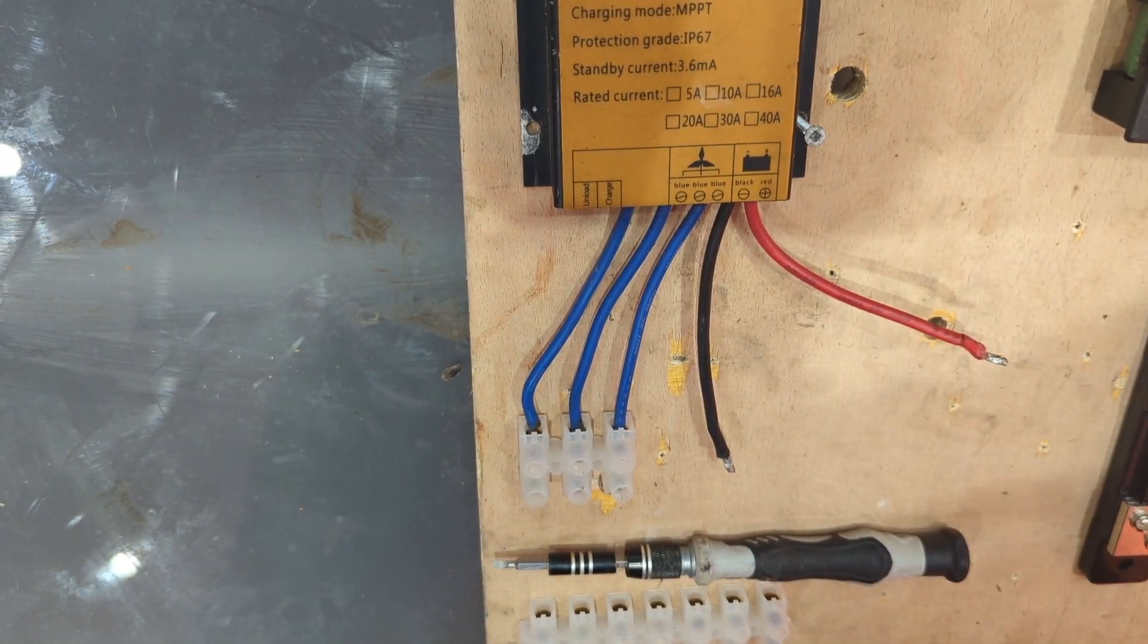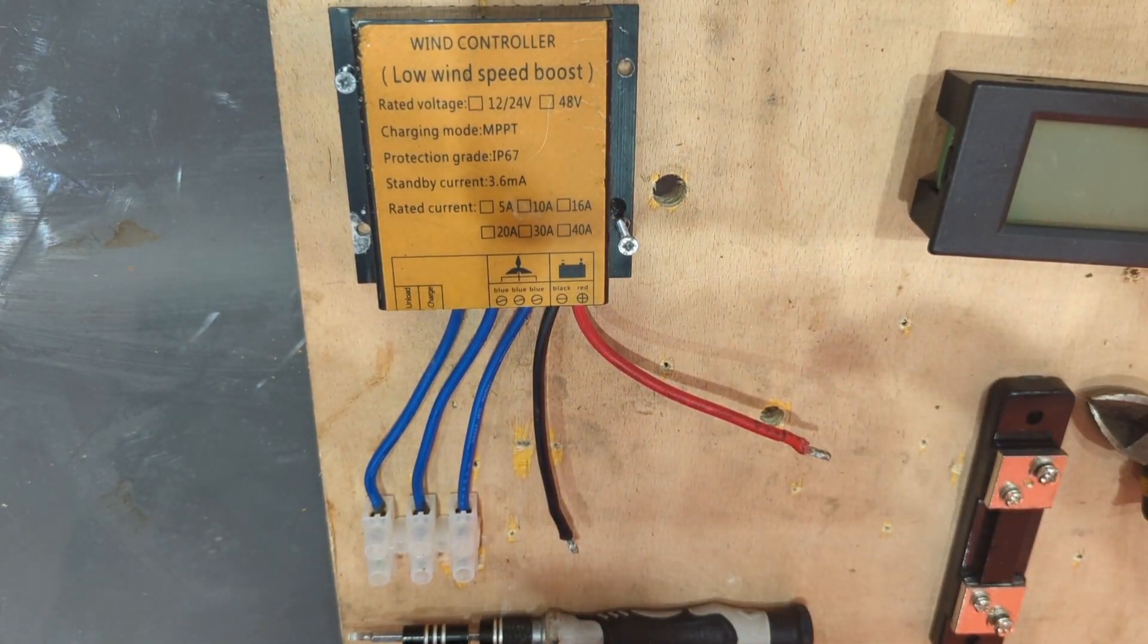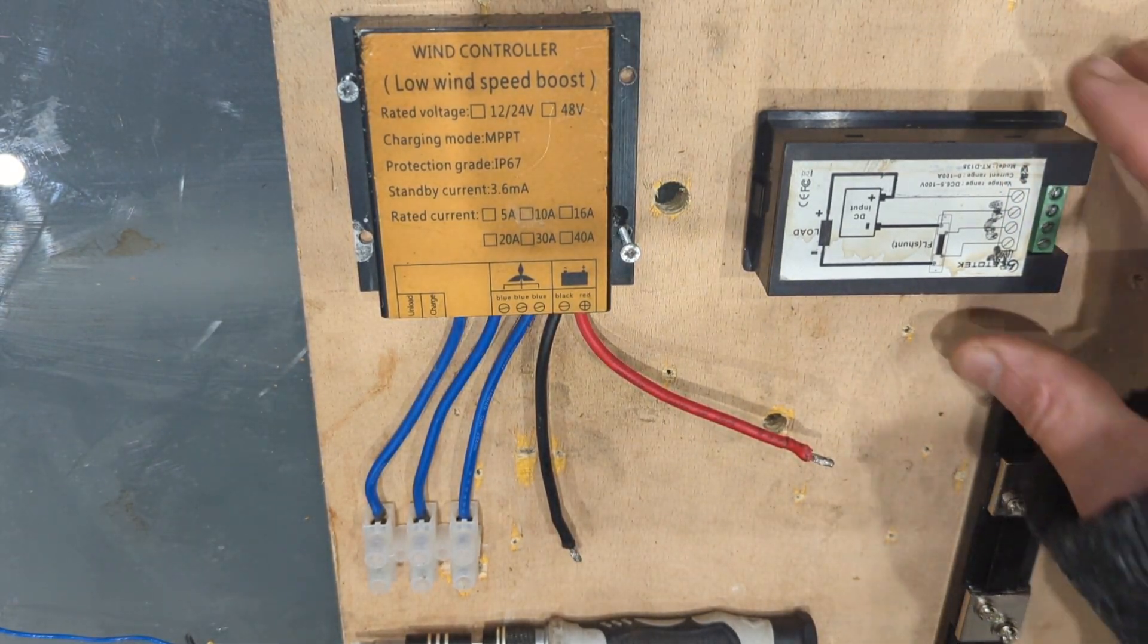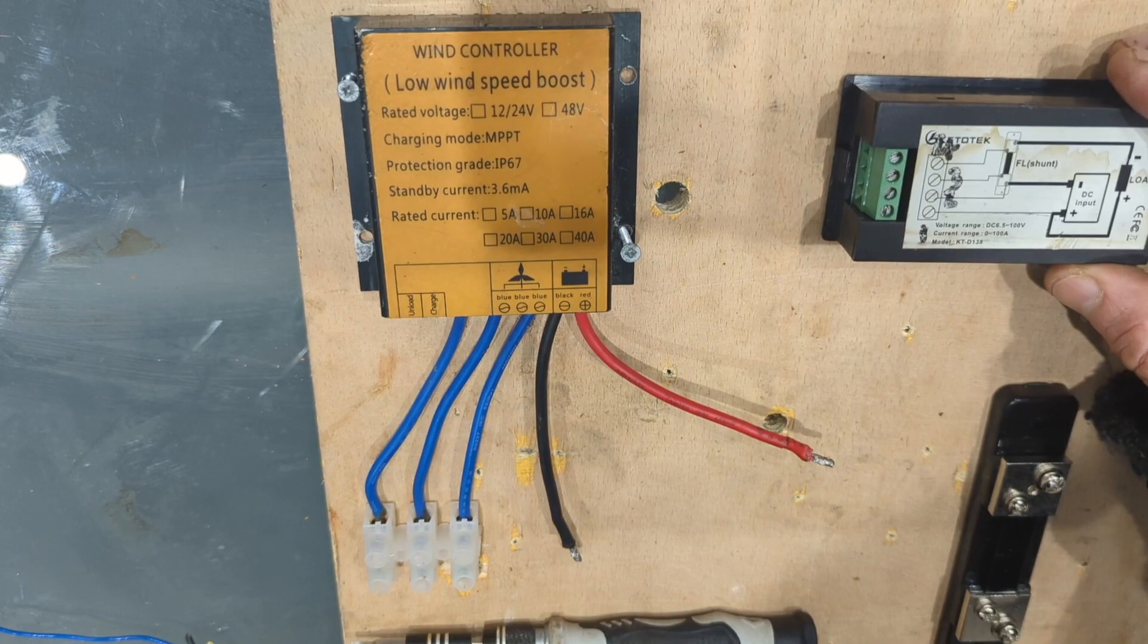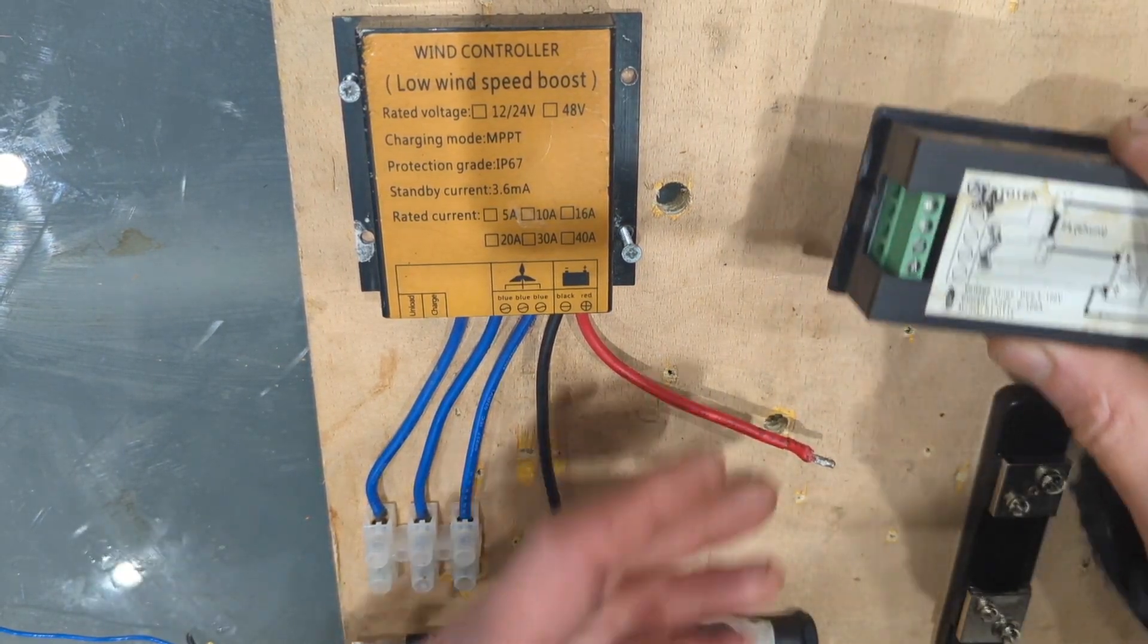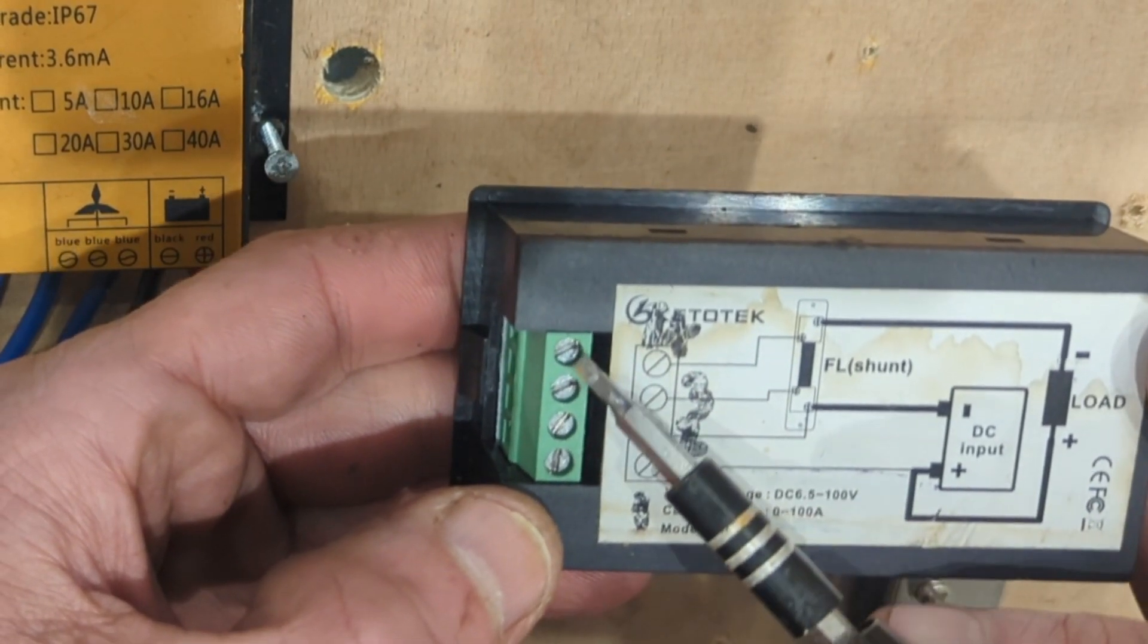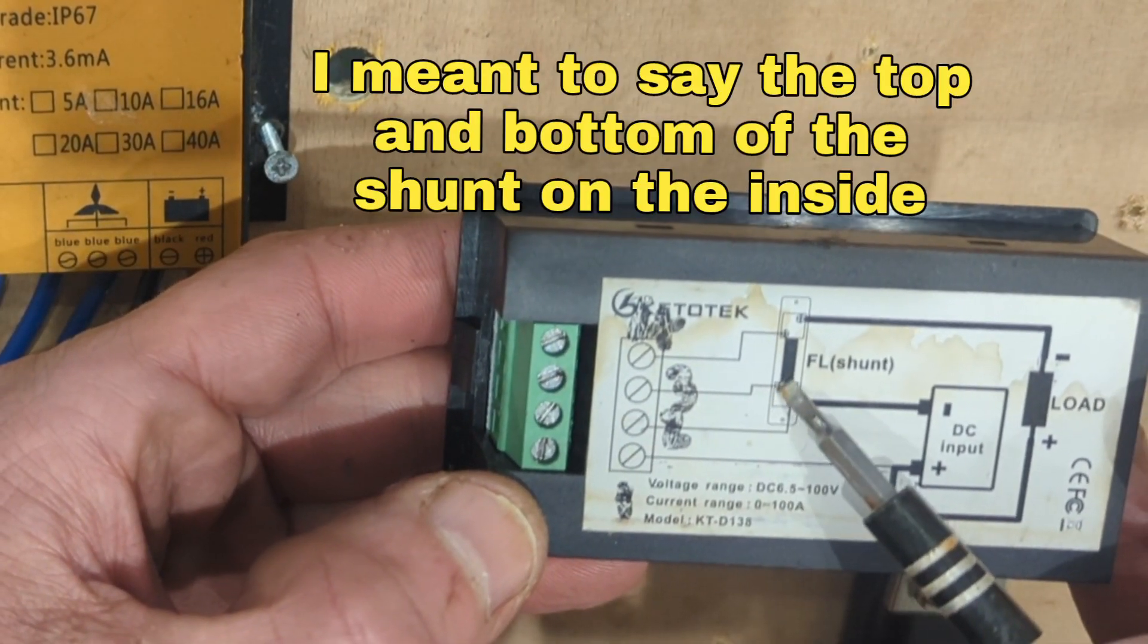Right, that's that taken care of. Now I just need to go and scavenge some wire. Right, I've got some bits of wire. So the first thing we're gonna do is to connect, we're going to connect these two first because, if you can see from the diagram, they go to the top and the bottom of the shunt.